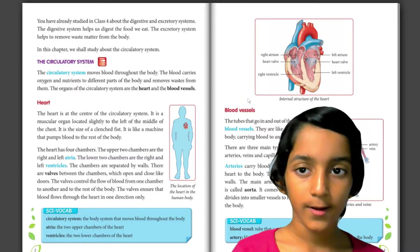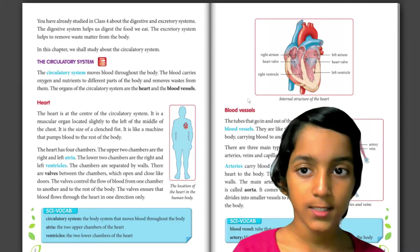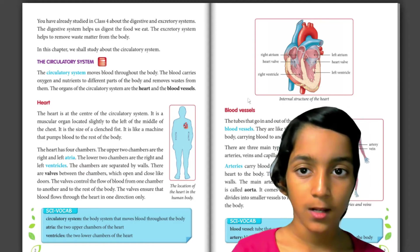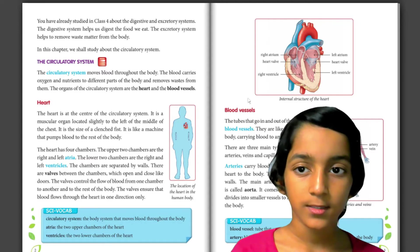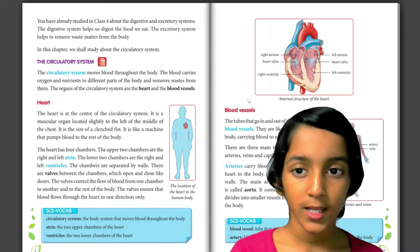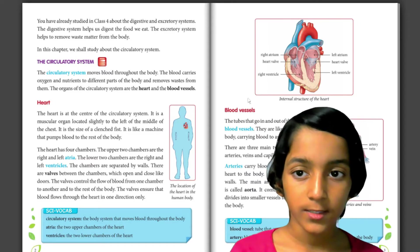You have already studied in class four about the digestive and respiratory system. The digestive system helps us to digest the food we eat. The respiratory system helps to remove waste matter from the body. In this chapter, we shall study about the circulatory system.